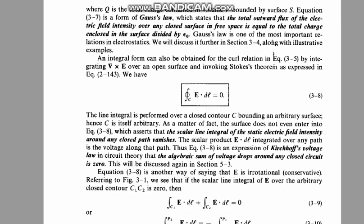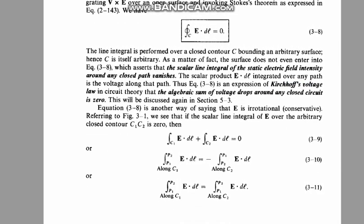Now, coming back to the point, to prove this equation, if a question asks you to prove it, you write: it is another way of saying that electric field E is irrotational. We see that the scalar line integral of the electric field over the arbitrary closed contour C₁, C₂ is zero.